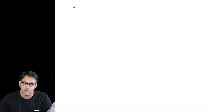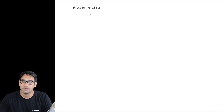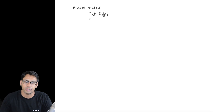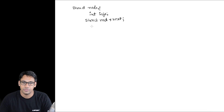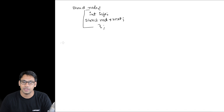Let us see how to define the node of a linked list using a structure. The basic definition is: write `struct node`, then specify the kind of data you want to store — for example, `int information` — and then write `struct node* link` or `struct node* next`. This is the basic node of a linked list.